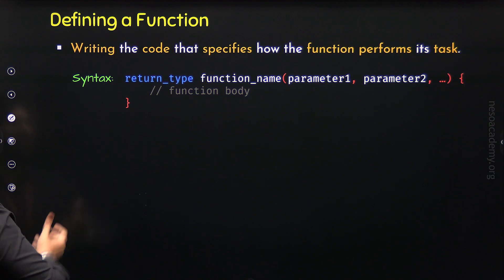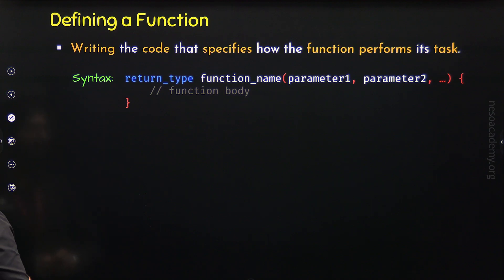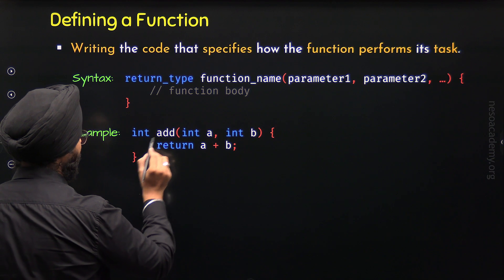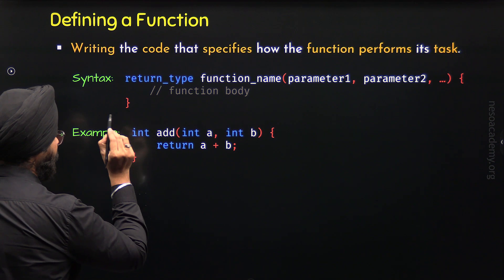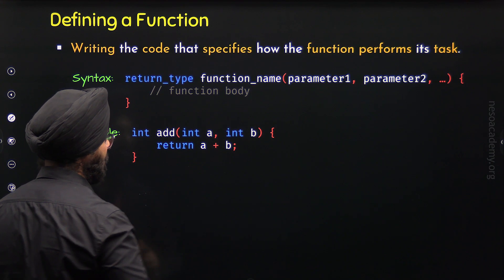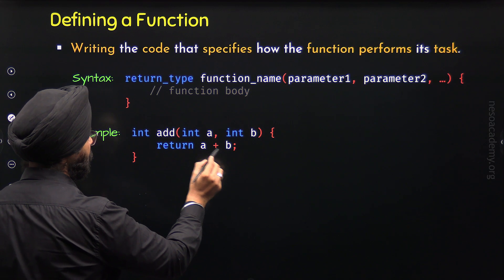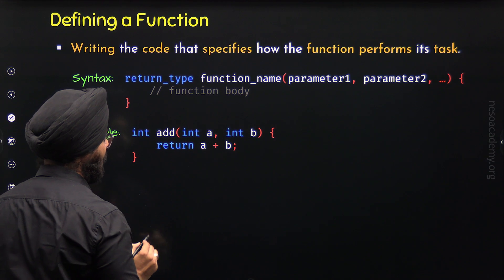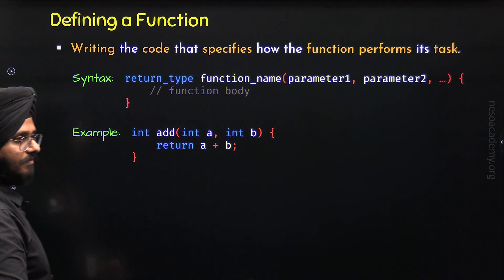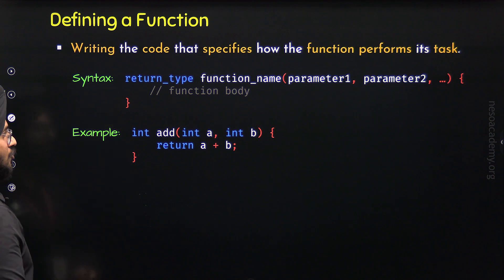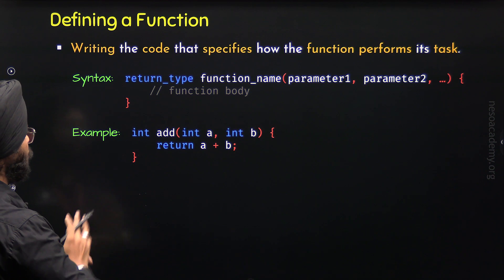Now let's implement this syntax. Let's define a function called add. Here is the definition of the add function. The name of the function is add, and the return type is int, meaning this function will return an integer output. The parameters are also integer parameters: a and b. Here is the body of this function: we have return a plus b. This function adds a and b and returns the result. So that's the function definition in C++. With this, we have understood how to define a function.